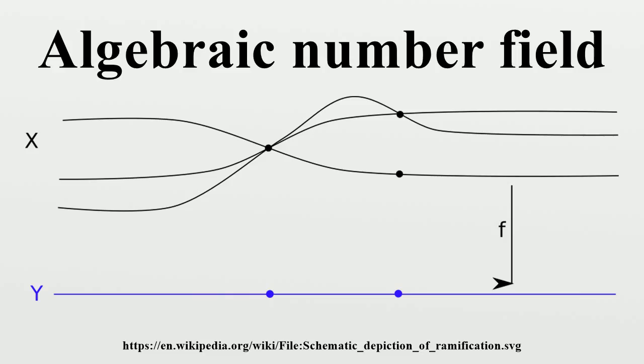This follows from the uncountability of R and C as sets, whereas every number field is necessarily countable. The set Q² of ordered pairs of rational numbers, with the entry-wise addition and multiplication is a two-dimensional commutative algebra over Q. However, it is not a field, since it has zero divisors.